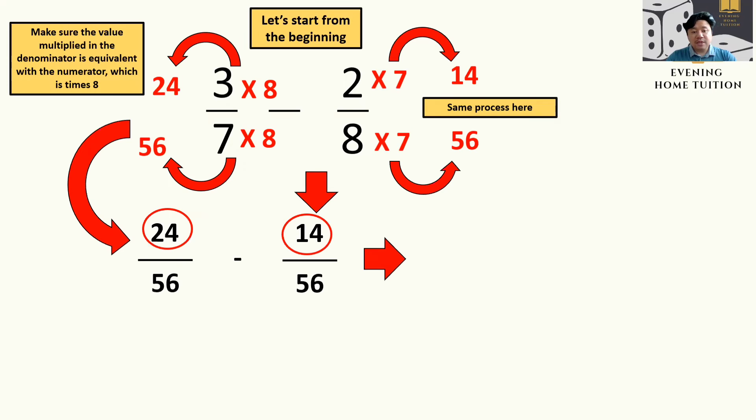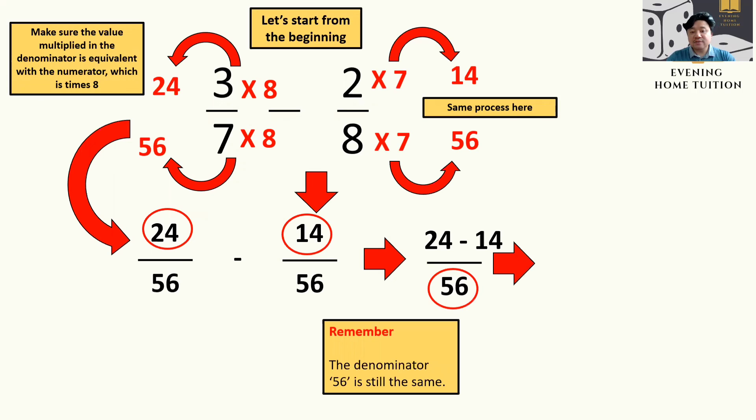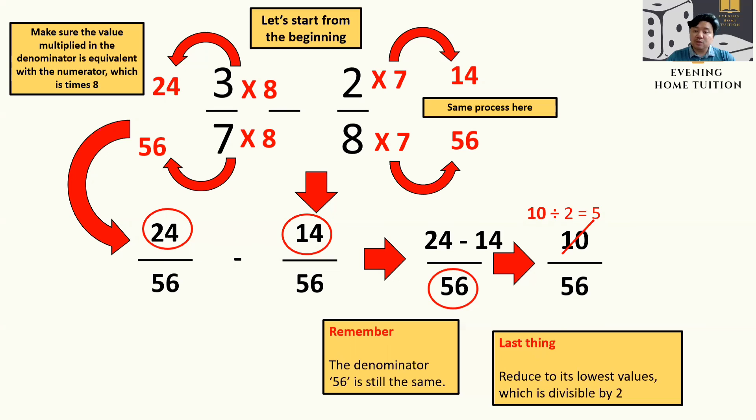And then you can subtract, and make sure that the denominator is the same throughout, which is 56 here. So 24 minus 14 will make it 10 over 56, and you can reduce it to its lowest value by prime number 2. So 10 divided by 2 equal to 5, and 56 divided by 2 is equal to 28. Now the answer is 5 over 28.